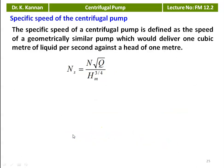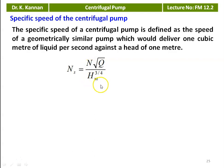The specific speed of the centrifugal pump is defined as the speed of a geometrically similar pump which would deliver 1 cubic meter of liquid per second against a head of 1 meter. The formula is Ns = N·√Q / Hm^(3/4), where Q is the discharge, N is the speed, and Hm is the manometric head. Specific speed is an important parameter for the design of centrifugal pumps and is used to compare the performance of different types of pumps of similar capacity.